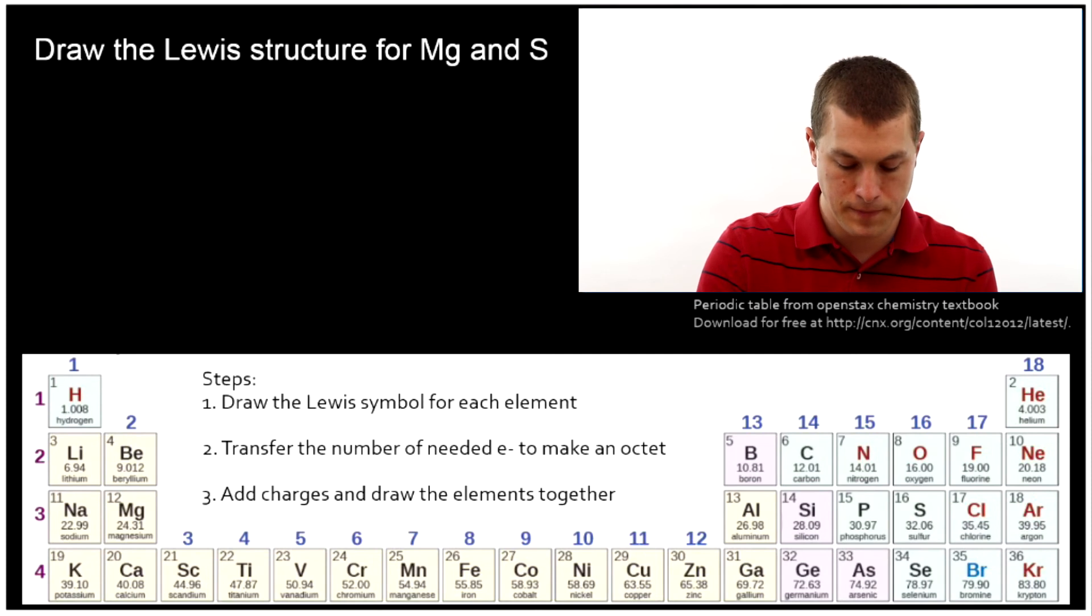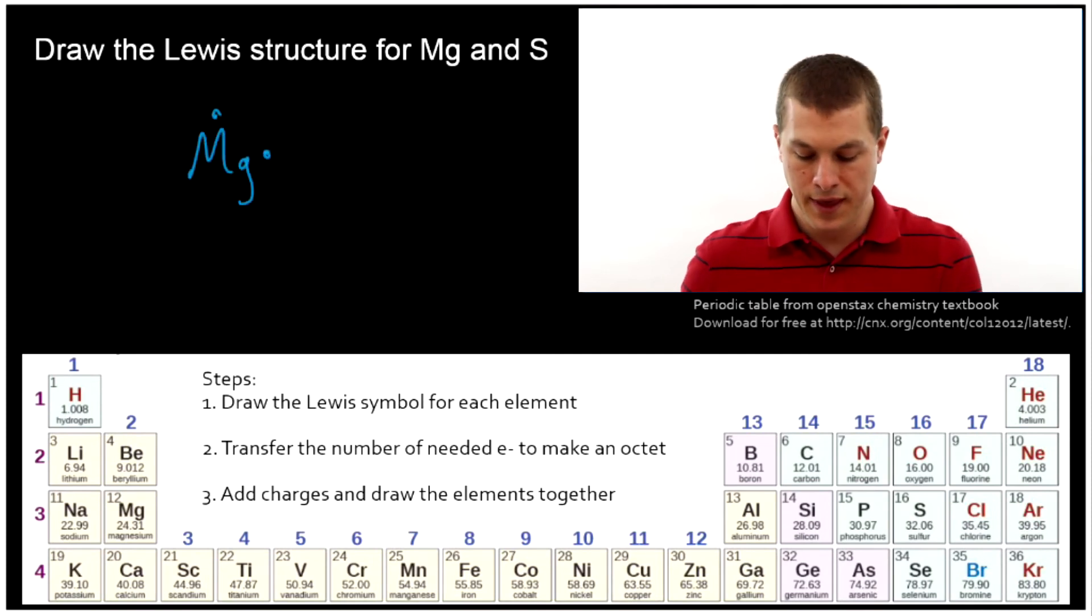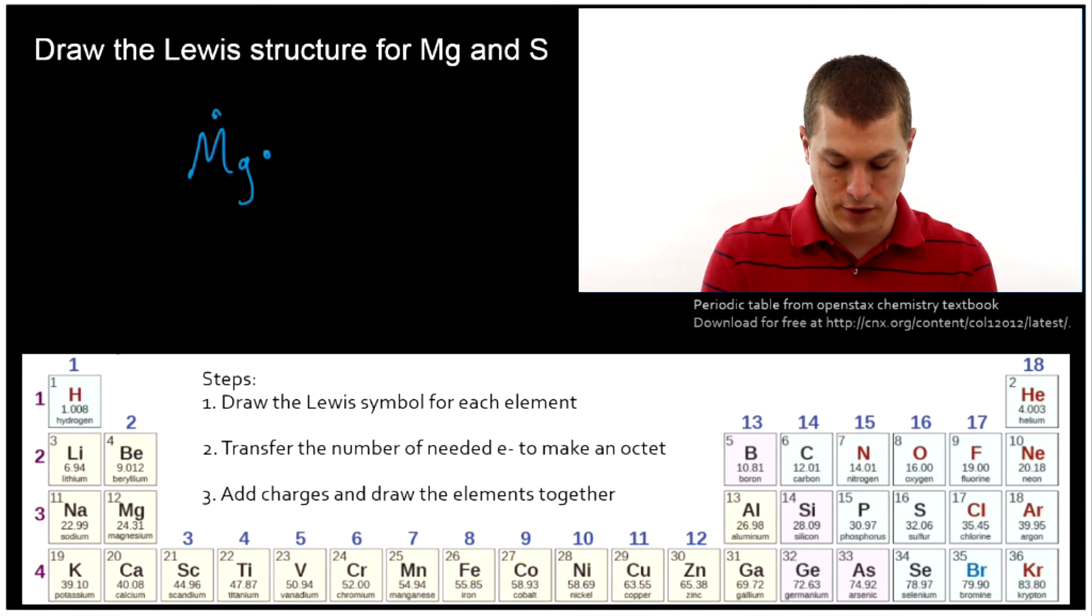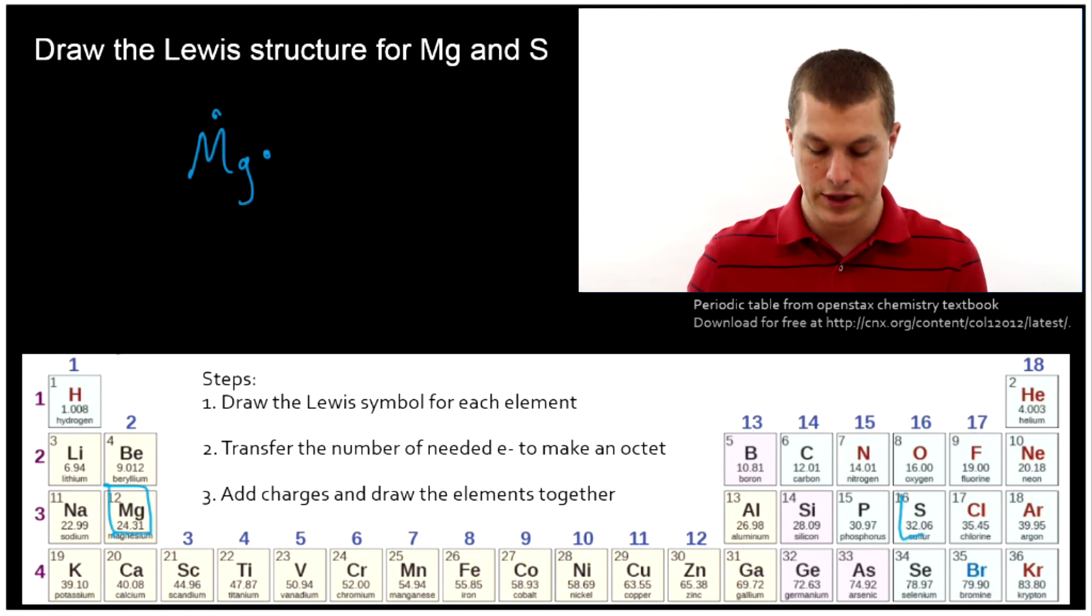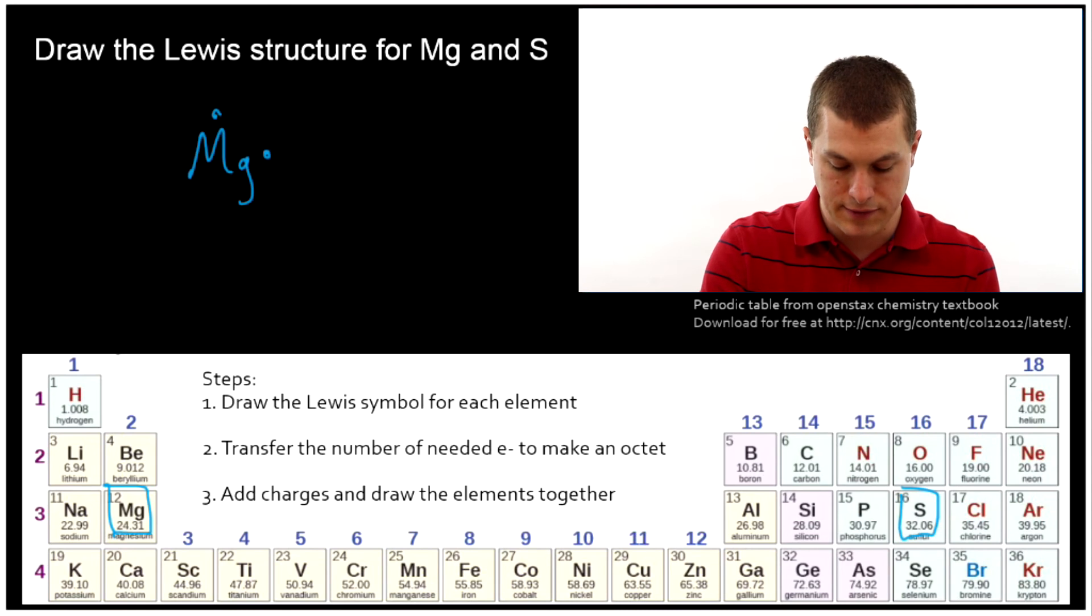So magnesium is going to have two valence electrons. And sulfur, because it is the sixth box over in that row, is going to have six valence electrons.